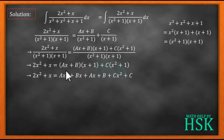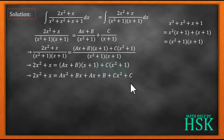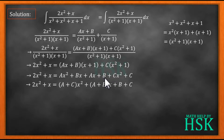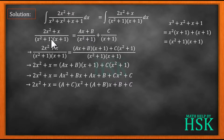Multiplying out the terms: (Ax + B)(x + 1) gives Ax² + Ax + Bx + B, and expanding C(x² + 1) gives Cx² + C. Separating and grouping terms, I take x² common from the x² terms to get (A + C)x², take x common from the x terms to get (A + B)x, and the constant terms give (B + C). This gives me the expanded right hand side to compare with 2x² + x on the left.